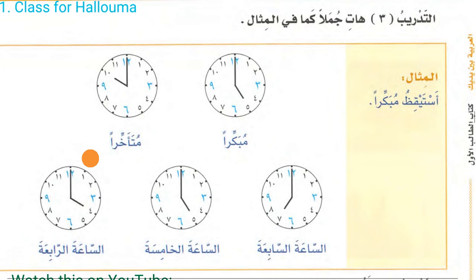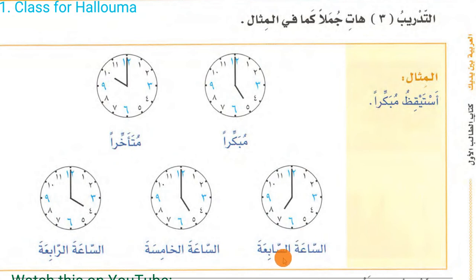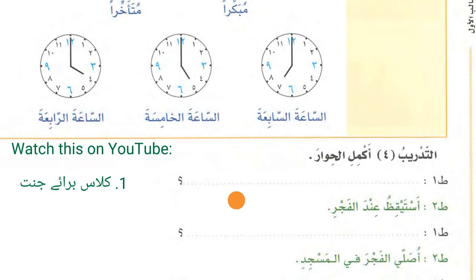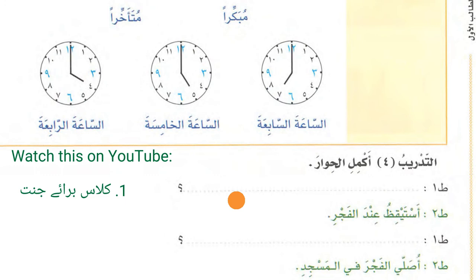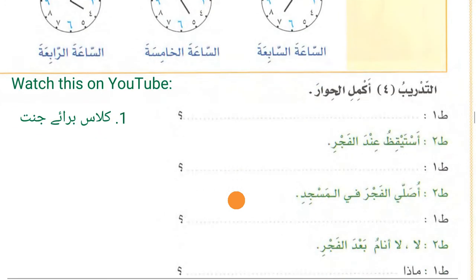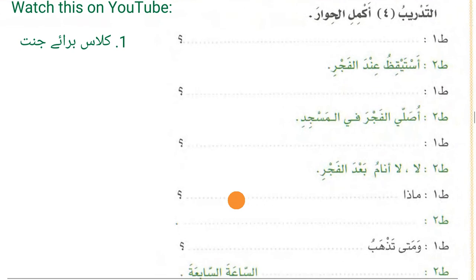Then at-Tadribu ath-Thalith: hati jumlatan kama fil-misal — bring sentences like in the example. As-taikizu mubakkiran — I wake up early. As-taikizu muta'akhkhiran — I wake up late. Then you say: As-taikizu sa'at as-sabi'a — I wake up at seven o'clock. As-taikizu sa'at al-khamisa — I wake up at five o'clock. Remember in all exercises you need to practice without looking at the example — hide the example and practice verbally, orally, with a loud voice. Then it will benefit you insha'Allah.